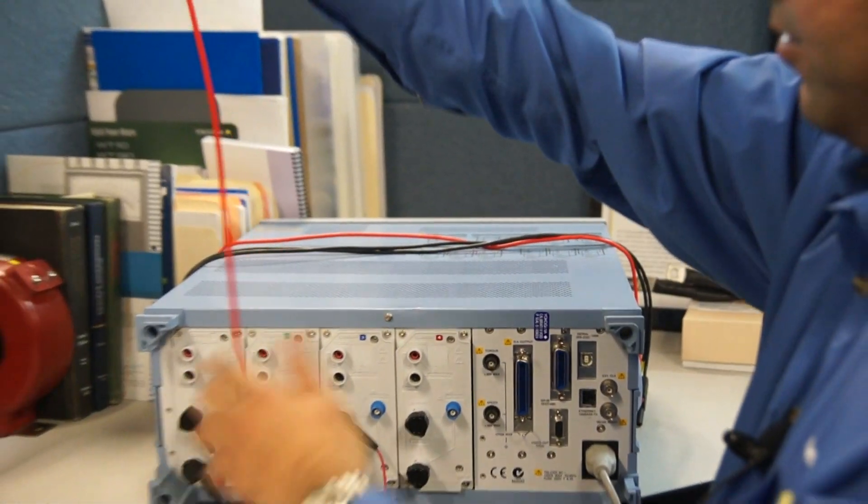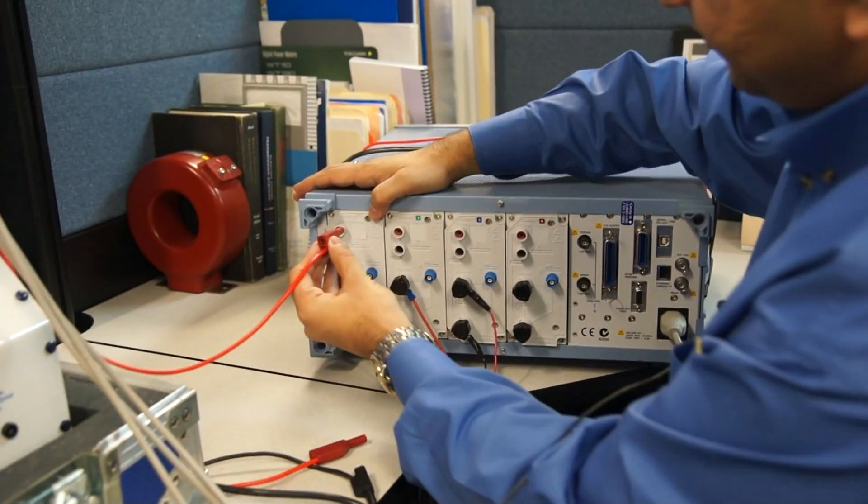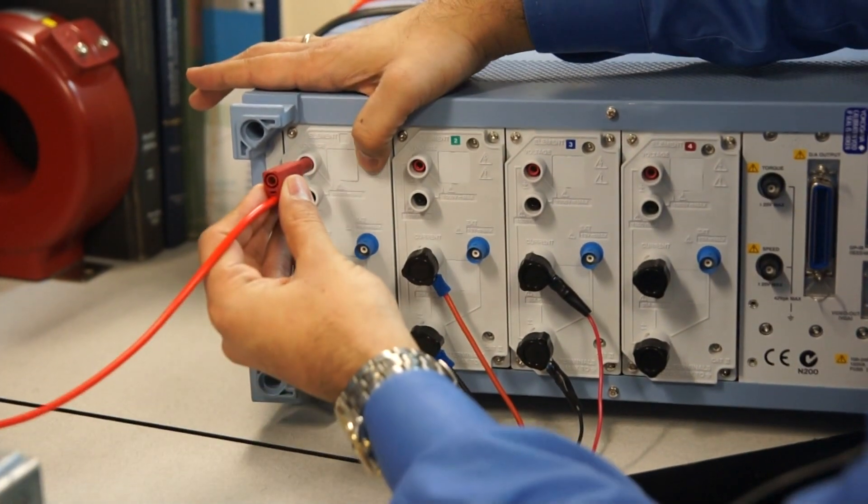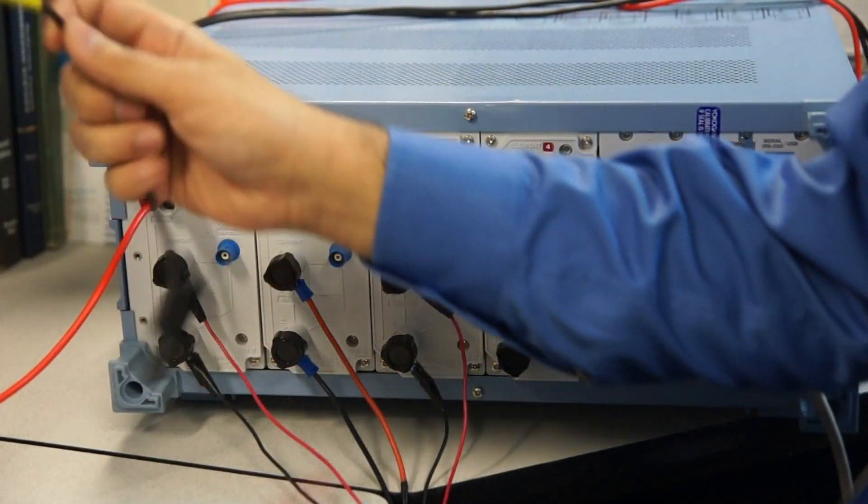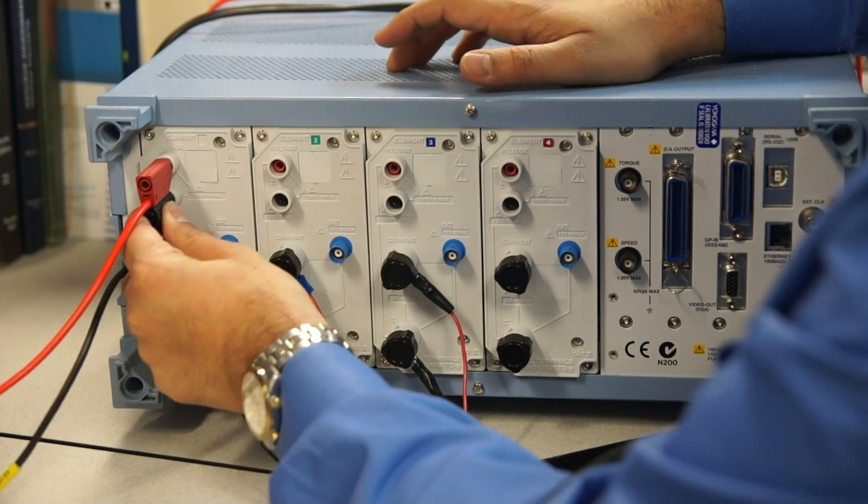So I have my phase voltage A here which I am going to connect to the first wattmeter. So the first wattmeter is going to measure A to C. So that is phase A voltage to phase C voltage.